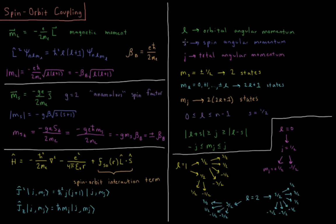To summarize these three angular momenta: L is orbital angular momentum, S is spin angular momentum, and those two combine to give the total angular momentum J. m_s for an electron is ±1/2, giving two possible states. m_L equals 0, ±1, ±2, up to ±L, giving 2L+1 states for a given L. m_j therefore gives 2×(2L+1) total states — the two spin states and the 2L+1 orbital states combined.